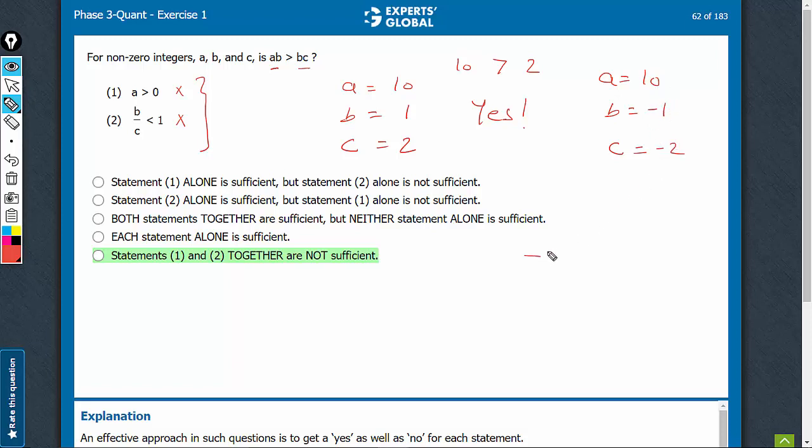Now, ab is minus 10, whereas bc is 2, and therefore, no, ab is not greater than bc. So now we got no as an answer. We could get yes as well as no on combining. So even combining did not work, and therefore, e is the right answer choice.